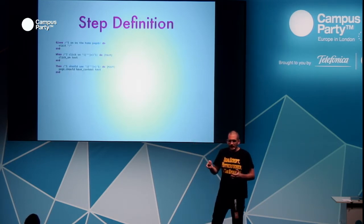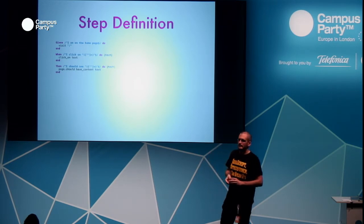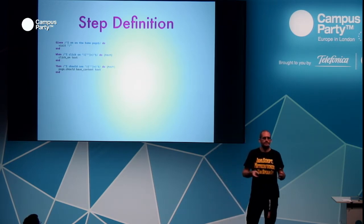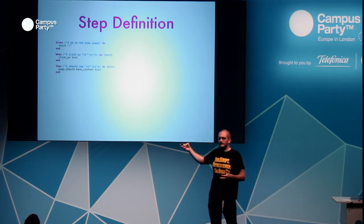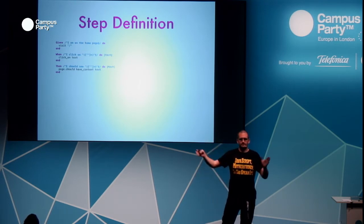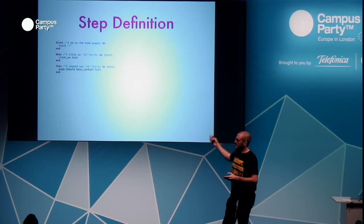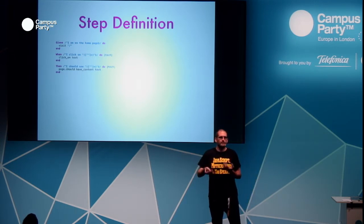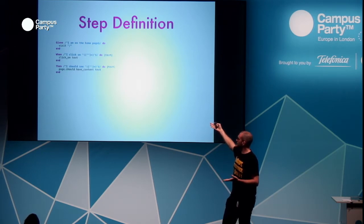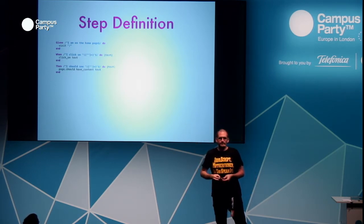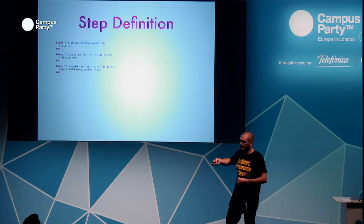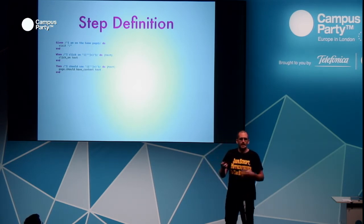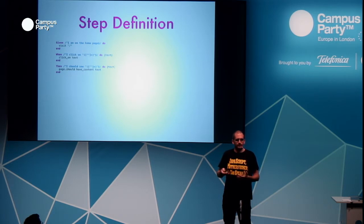This is backed by a Ruby DSL where those steps are powered by regular expressions. We can extract text from those steps. This is the simple Capybara stuff — one-line simple methods: 'visit slash' for the page we're visiting, 'click on' text that will click a link or button matching that text, and 'page.should have content' with the text. There are cheat sheets out there that let you assemble this stuff pretty quickly.